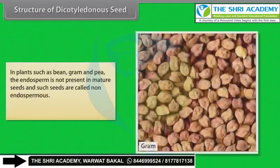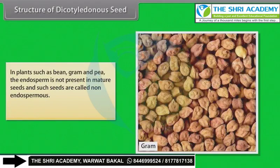In plants such as bean, gram and pea, the endosperm is not present in mature seeds, and such seeds are called non-endospermous. Example: gram.